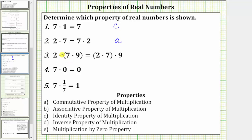Three, we have two times the quantity seven times nine equals the quantity two times seven times nine. Notice here the grouping symbols, or parentheses, have changed within the product. This is the associative property of multiplication, which is b. Next we have seven times zero equals zero. Whenever we have a product involving zero, this is the multiplication by zero property, which is e.